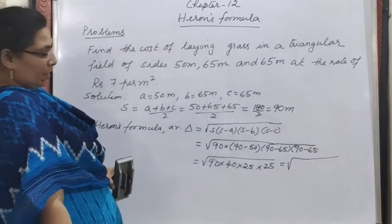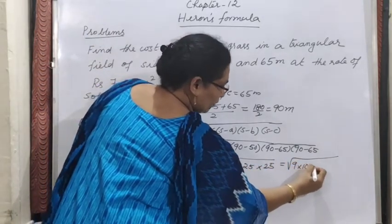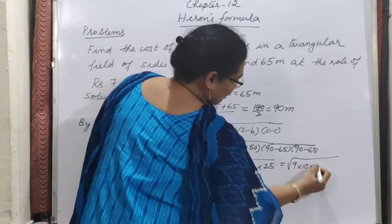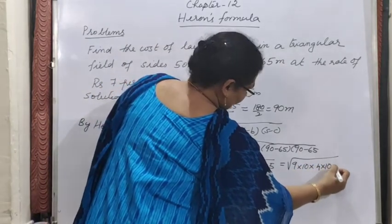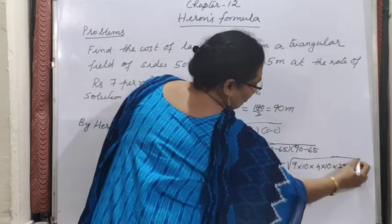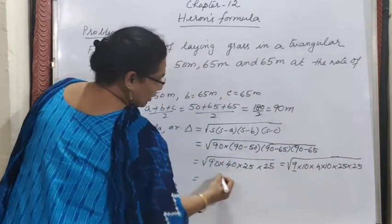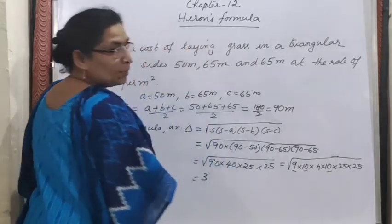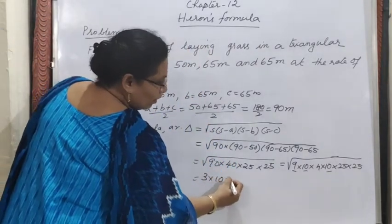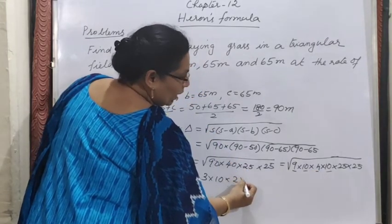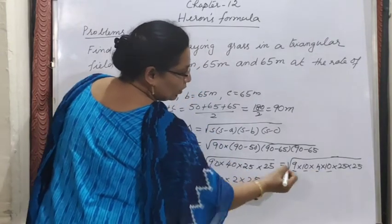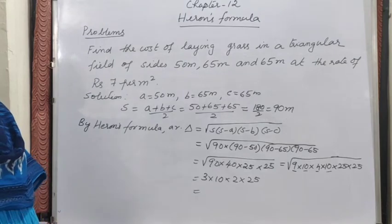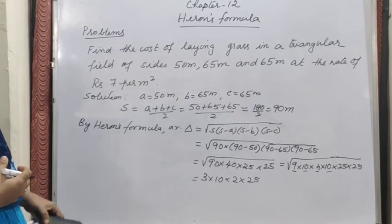We factorize: 90 = 9 × 10, 40 = 4 × 10, and 25 × 25 is already there. Finding pairs: √9 gives 3, one pair of 10 gives 10, √4 gives 2, and 25 gives 5 each — so we take out 3 × 10 × 2 × 25 = 1500. Area = 1500 m².